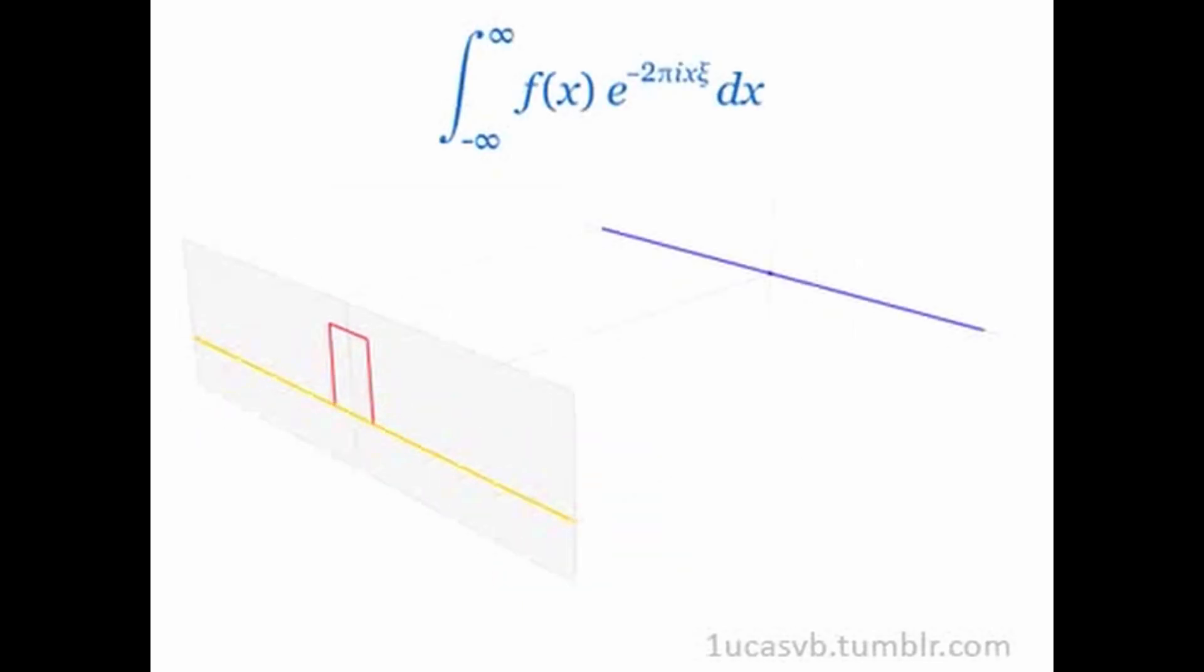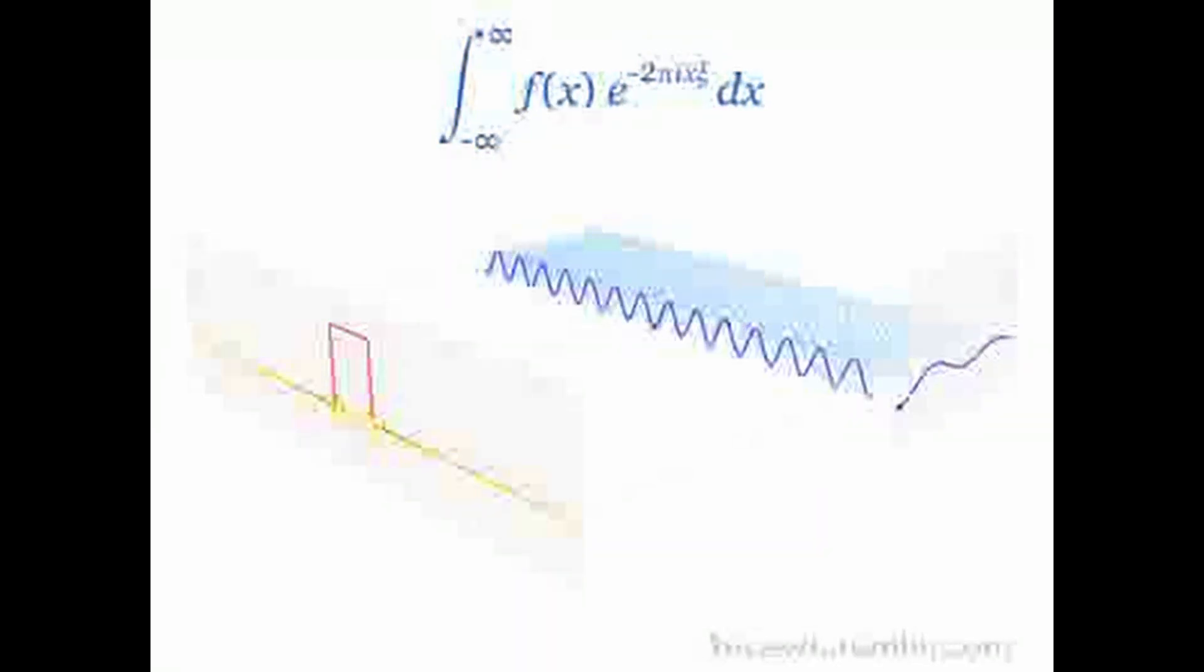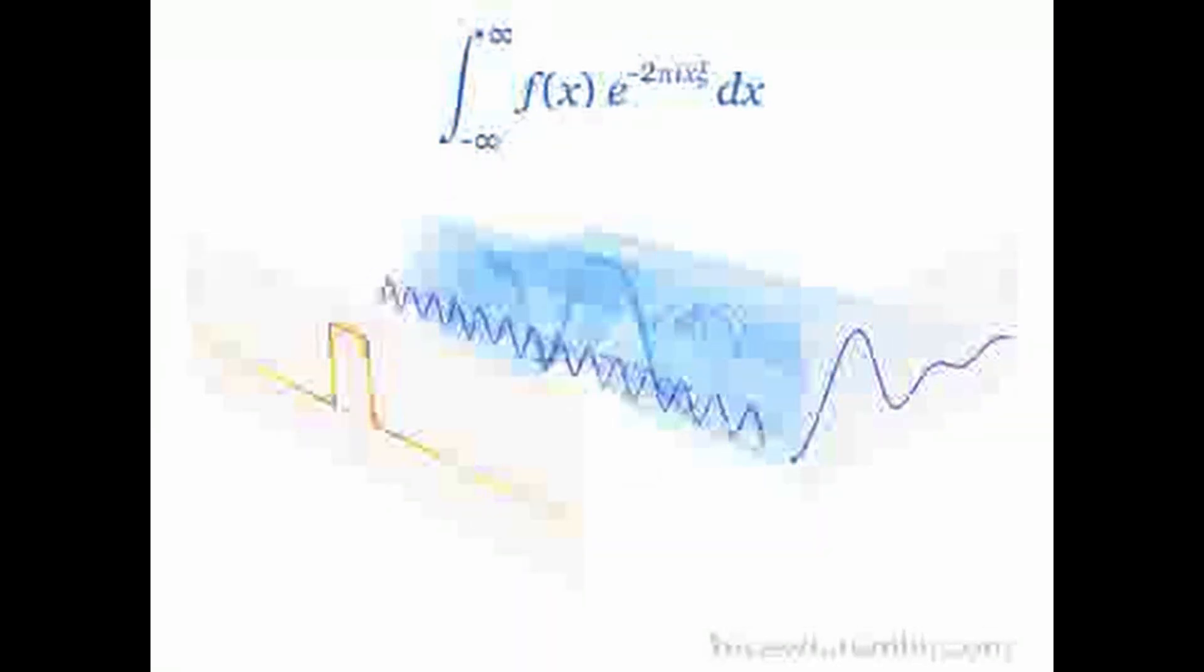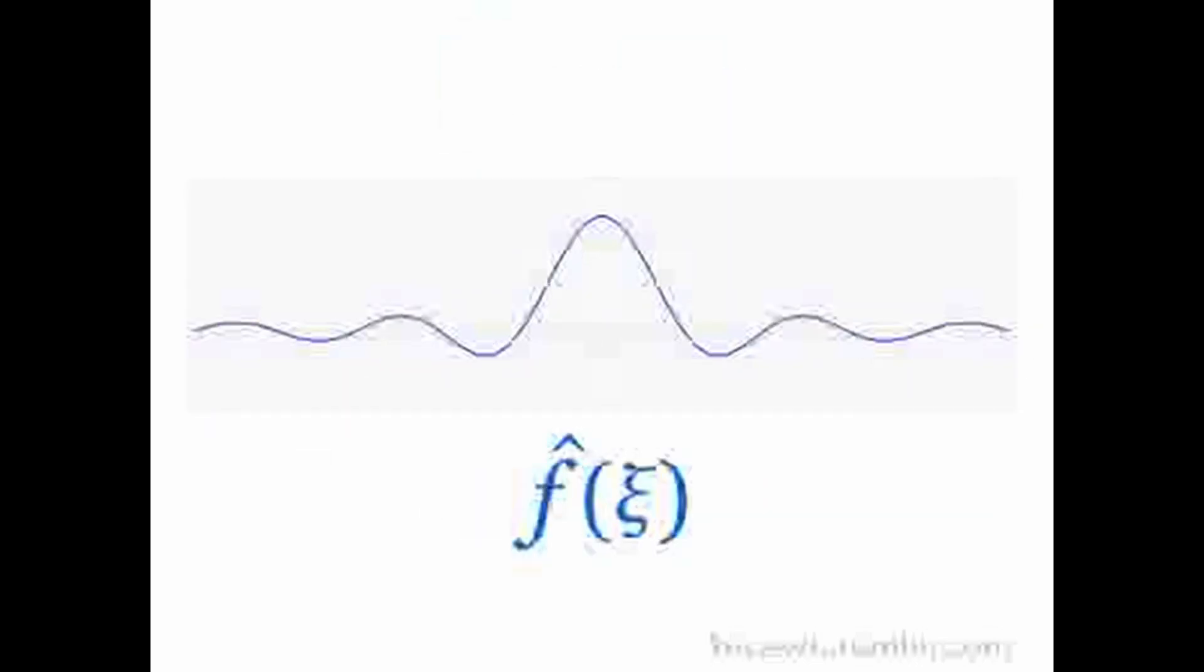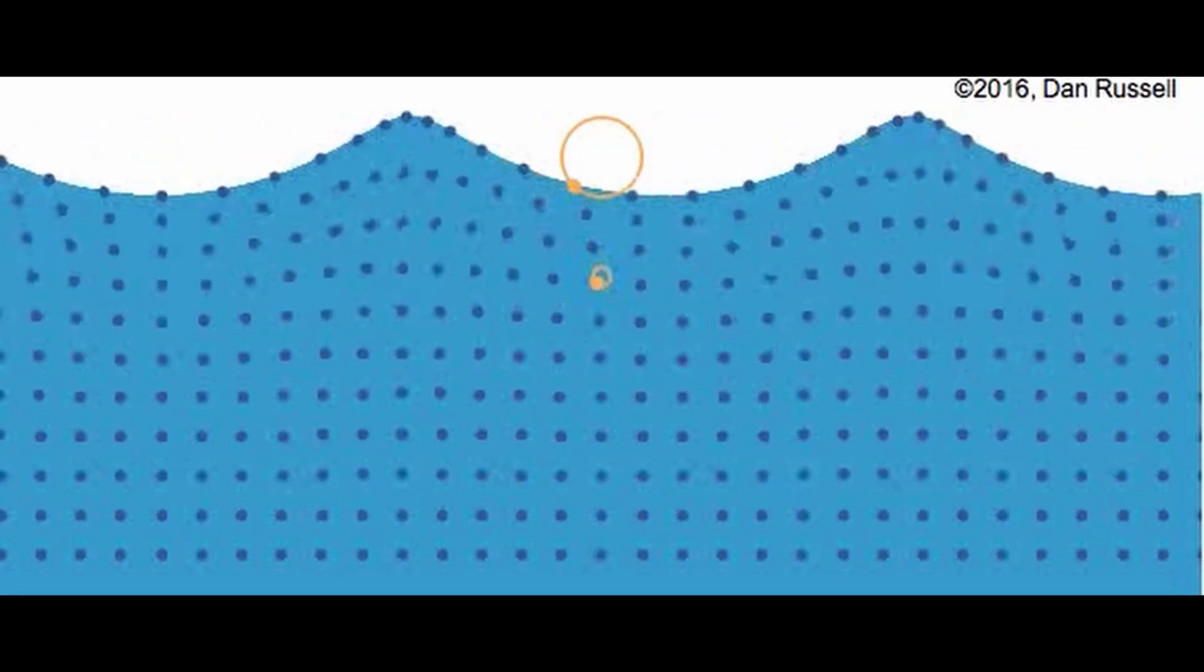To calculate the Fourier transform of a signal in practice, you need to use a numerical method such as the fast Fourier transform (FFT) algorithm. The FFT is a way of computing the discrete Fourier transform (DFT) of a finite sequence of data points, which approximates the continuous Fourier transform of a signal. The FFT can be implemented using a computer program or a specialized hardware device.